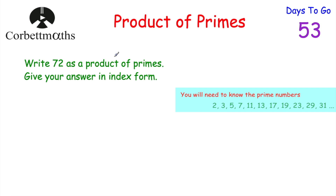Remember what that means — product means to multiply together, and primes are your prime numbers: 2, 3, 5, 7, 11, 13, 17, and so on. It's important you know those prime numbers. So every single whole number greater than 1 is either a prime number, or you can write it as prime numbers multiplied together. So here we've got 72. To write 72 as a product of primes, there are a few different ways — I like to do it using a factor tree, like so.